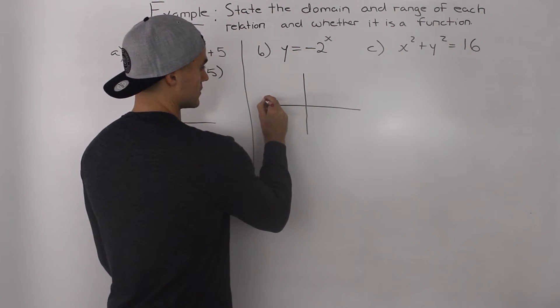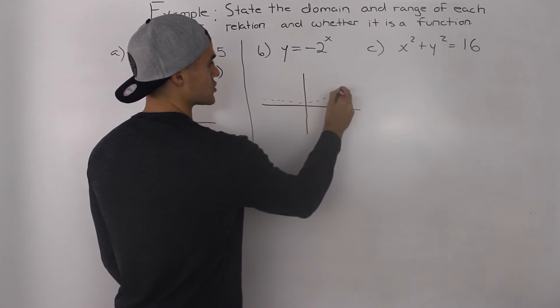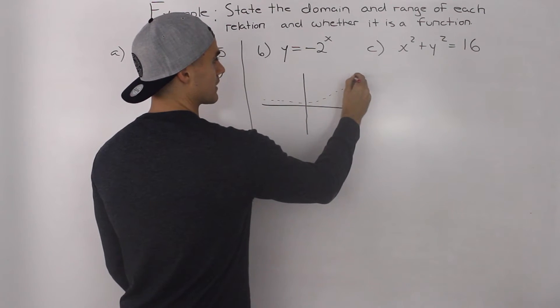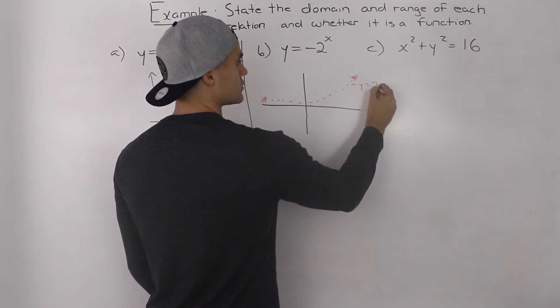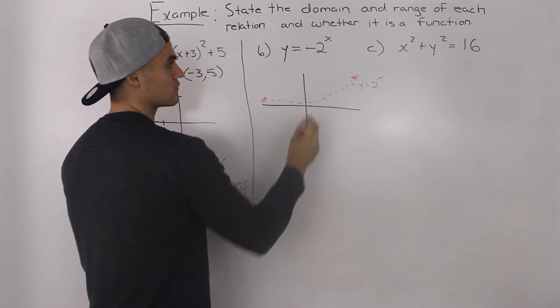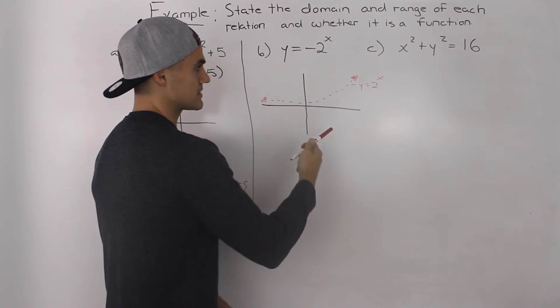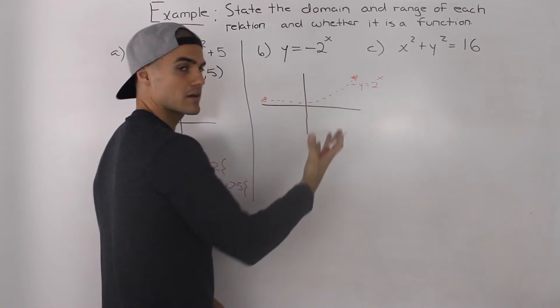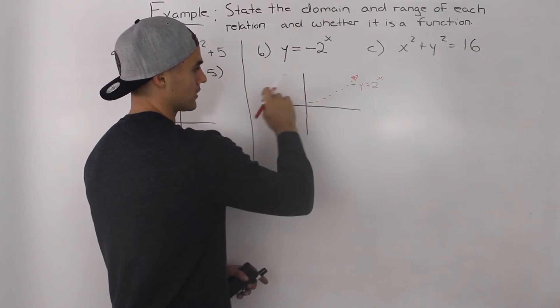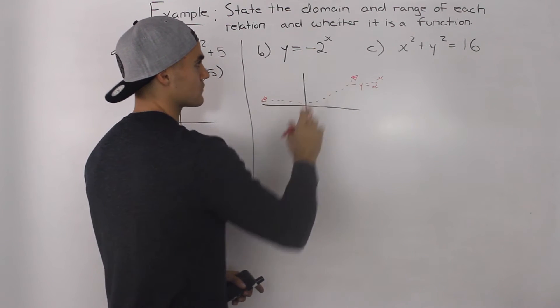So 2 to the power of x, if there was no negative, would look something like this, if you recall. So this here represents 2 to the power of x. You can make a table of values with a bunch of negative x values and a bunch of positive x values. And you would get this sort of shape.